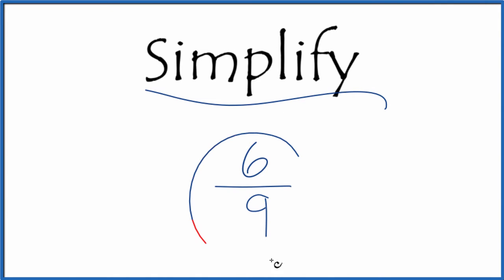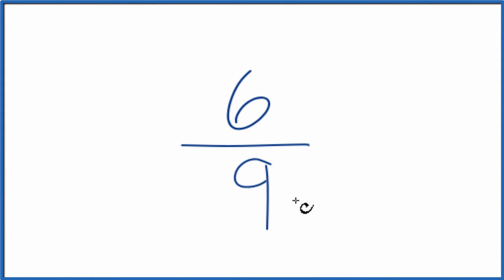Let's simplify the fraction 6 ninths. And here's how we can do that. We're trying to find another fraction that's equivalent to 6 over 9. It has the same value, it's just that it's in lower terms. Lowest terms is what we're looking for.